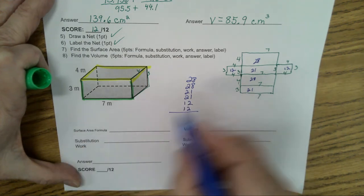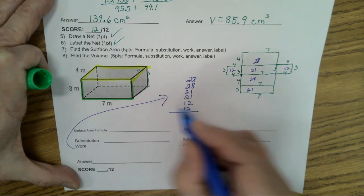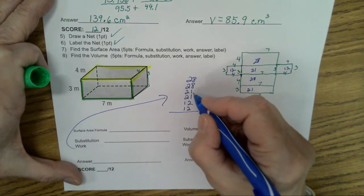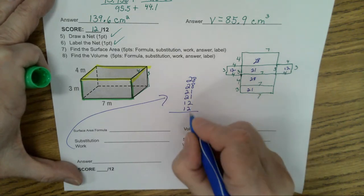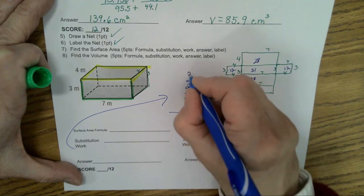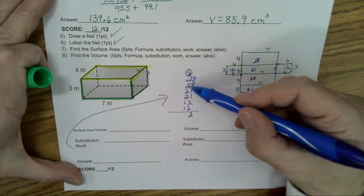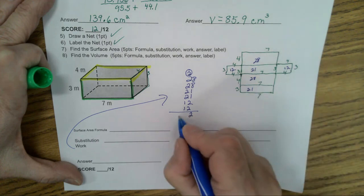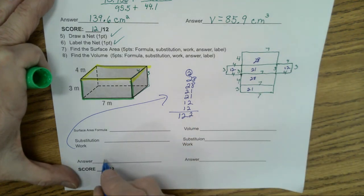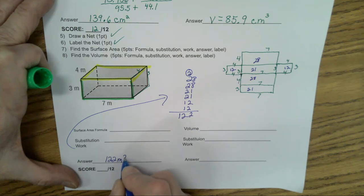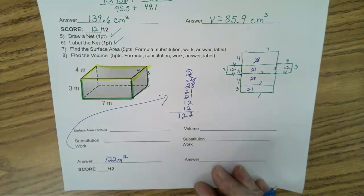This could also be the work if you showed it this direction. You would have 28 plus 28 plus 21 and 21, 12 and 12. 16, 17, 18, 20 plus 2 is 22. Carry a 2. 2, 4, 6, 8, 10. So you end up with the surface area of 122 meters squared. It is surface area.